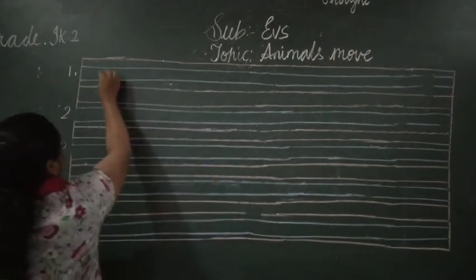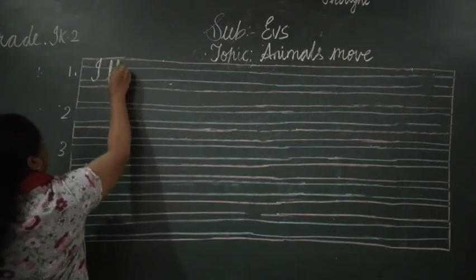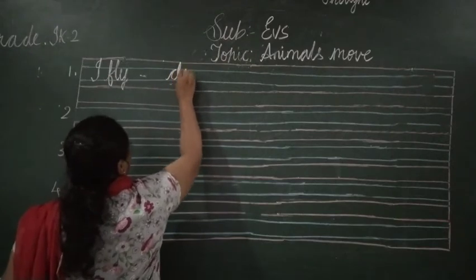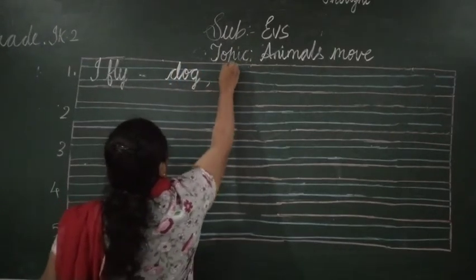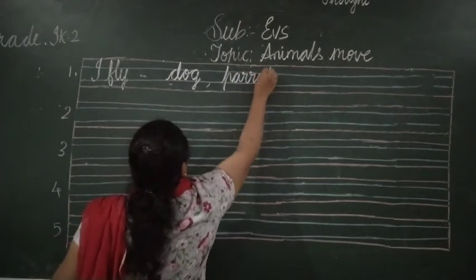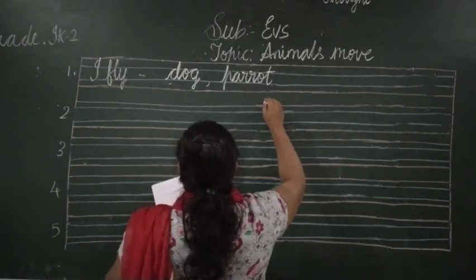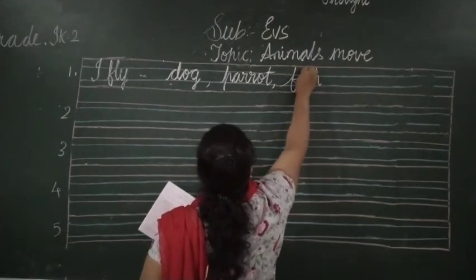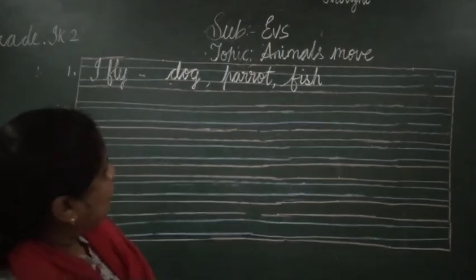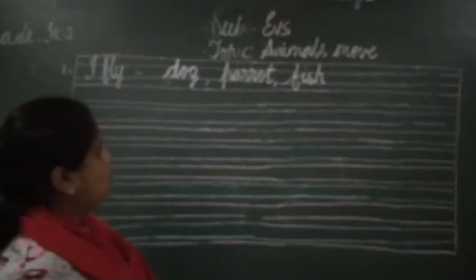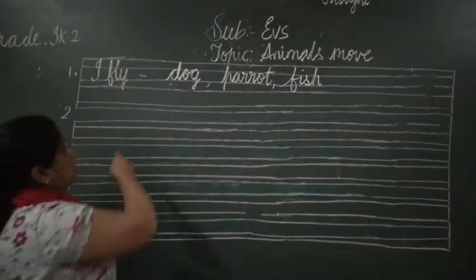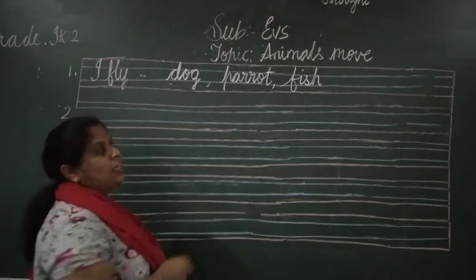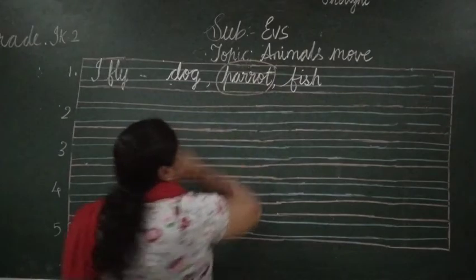For example, 'I fly.' The first question is 'I fly.' You have three animal options: dog, parrot, and fish. Which one flies? A dog can fly? No. A parrot can fly - yes. Fish swims, not flies. So you have to circle the animal that does this movement. Parrot flies, so circle parrot.